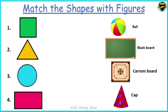Let's see the first shape — it is a square. The options on the right-hand side are: a ball, a blackboard, a carom board, and a cap. Which figure matches a square? Is it a ball? No. Is it a blackboard? No. Is it a carom board? Yes! The square shape matches with a carom board. Well done, children!